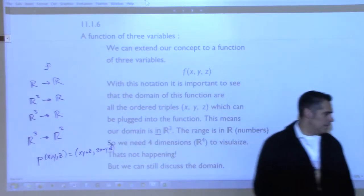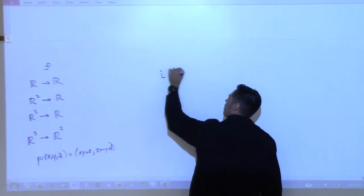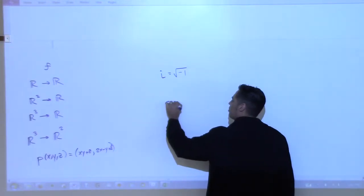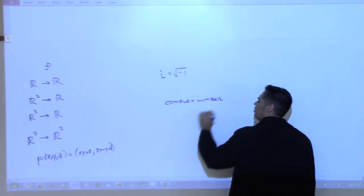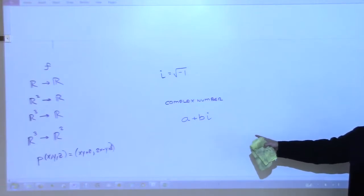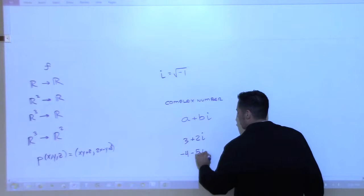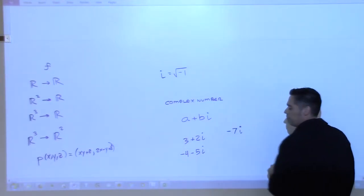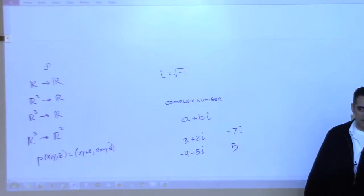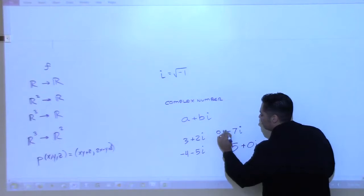I'm going to go off on a tangent here. In college algebra you study i, the square root of negative one. All complex numbers can be written in the form a + bi. Examples of complex numbers include: 3 + 2i, negative 4 minus 5i, negative 7i by itself, and even the number 5 — which is just 5 + 0i. And negative 7i is 0 + (−7i).